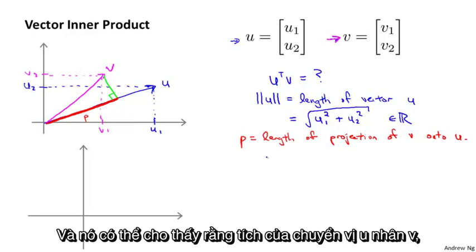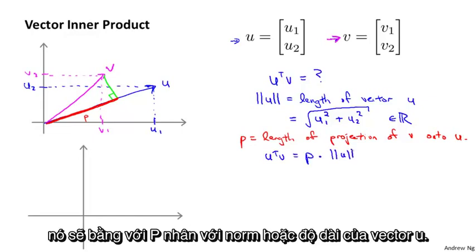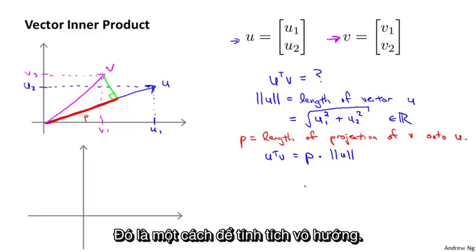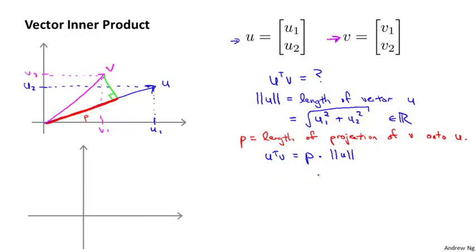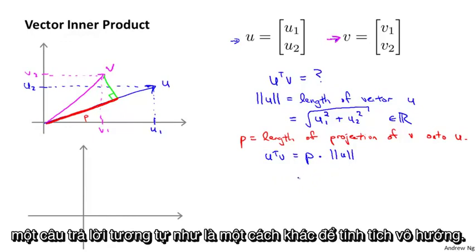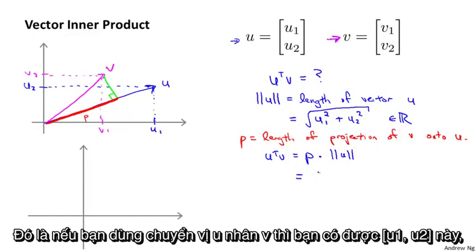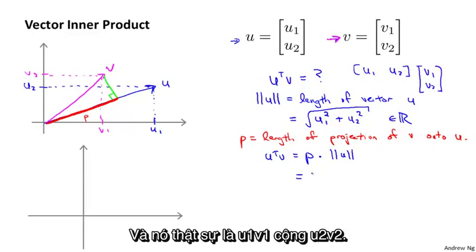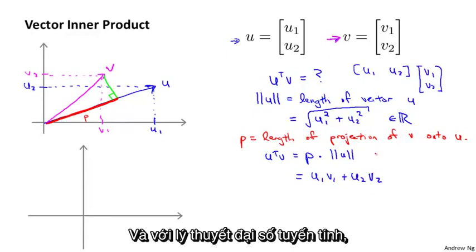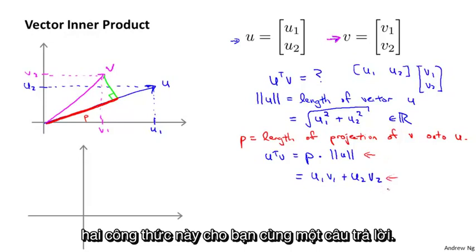So p is the length of the projection of the vector v onto the vector u. It's possible to show that the inner product u transpose v is going to be equal to p times the norm of the vector u. This is one way to compute the inner product. If you do the geometry, this gives the same answer as the standard formula: u transpose v equals u1*v1 plus u2*v2. It's a theorem of linear algebra that these two formulas give you the same answer.